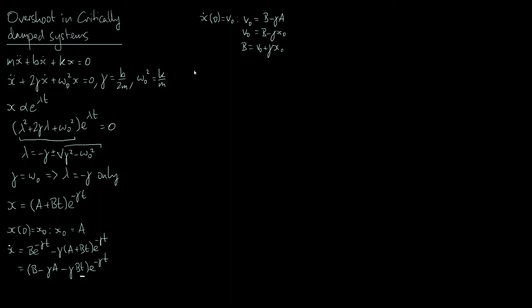Our specific solution is therefore x = [x₀ + (v₀ + γx₀)t]e^(-γt).